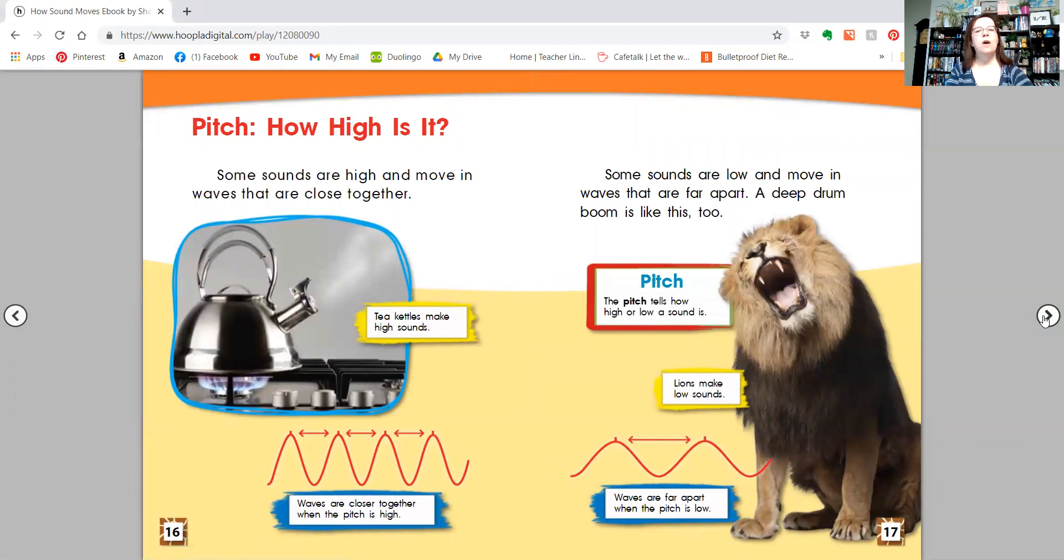It says pitch. How high is it? Some sounds are high and move in waves that are close together. Tea kettles make high sounds. Waves are closer together when the pitch is high. Some sounds are low and move in waves that are far apart. A deep drum boom is like this too. The pitch tells how high or how low a sound is. Lions make low sounds because they have a big growl. Waves are far apart when the pitch is low.